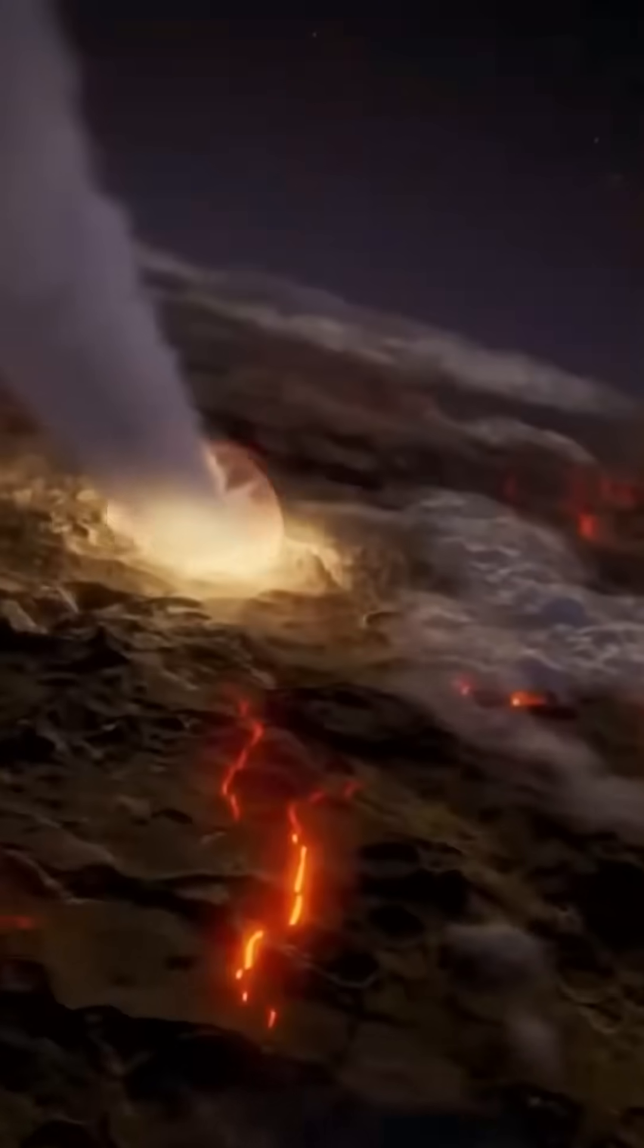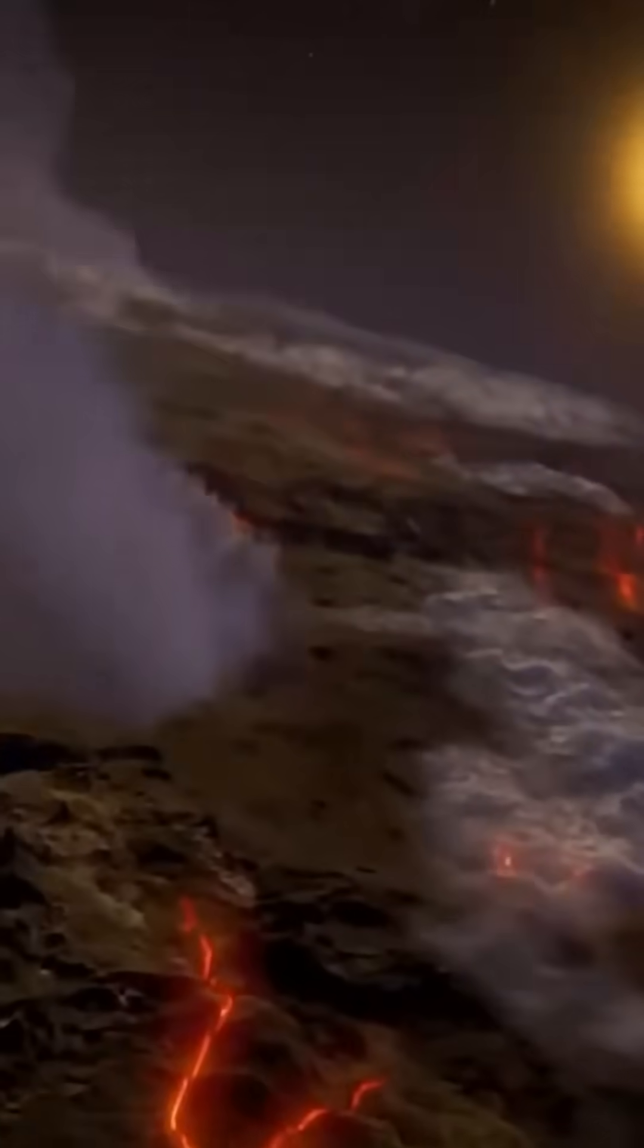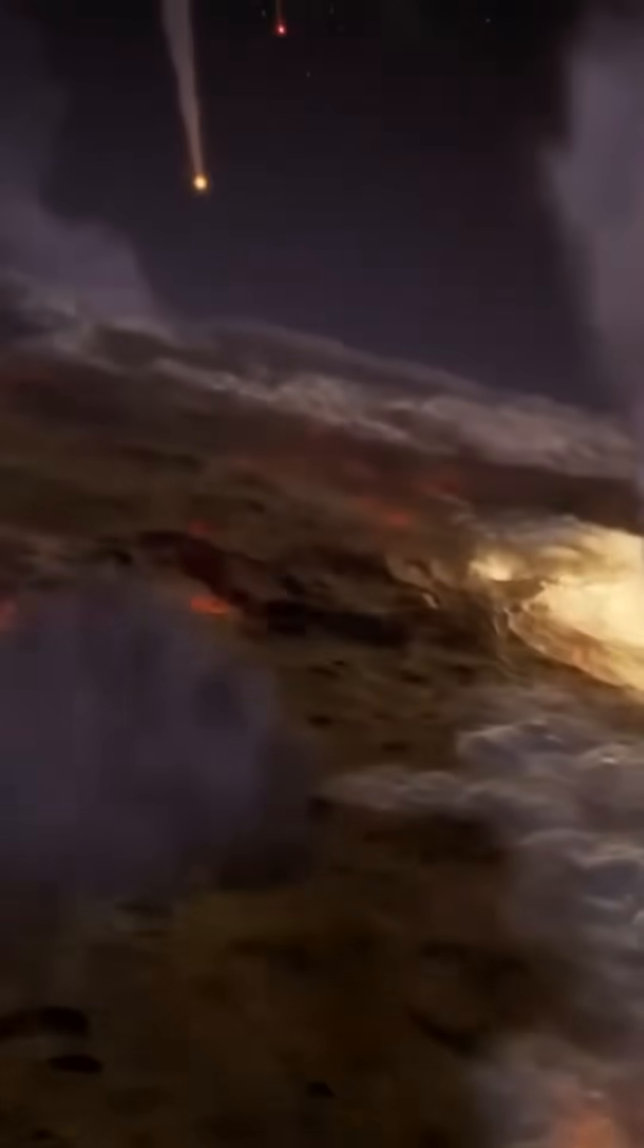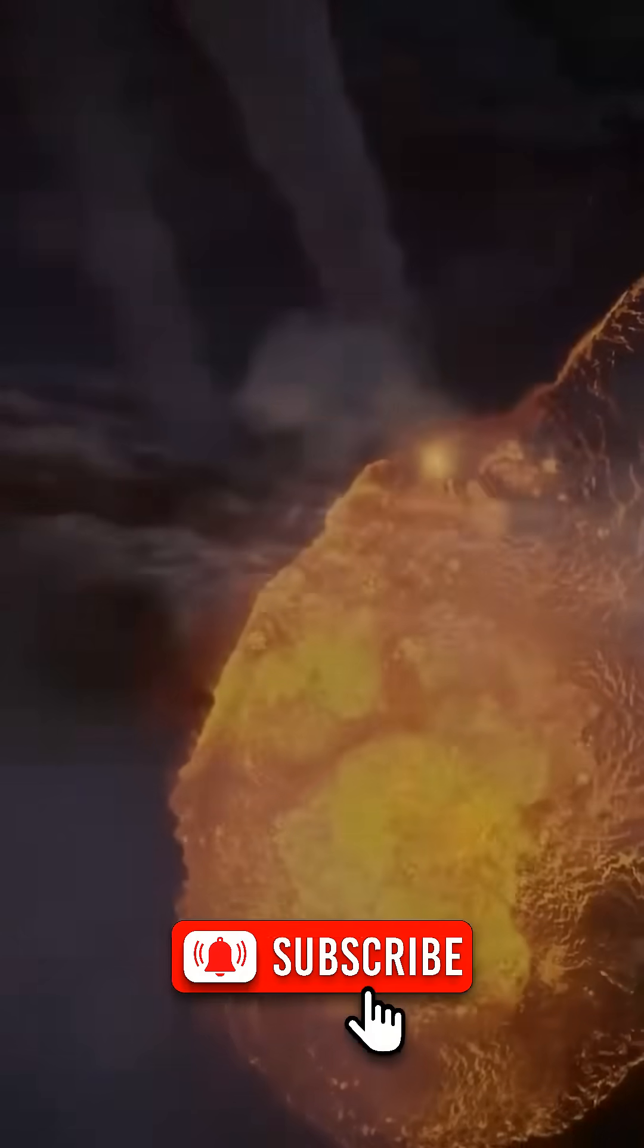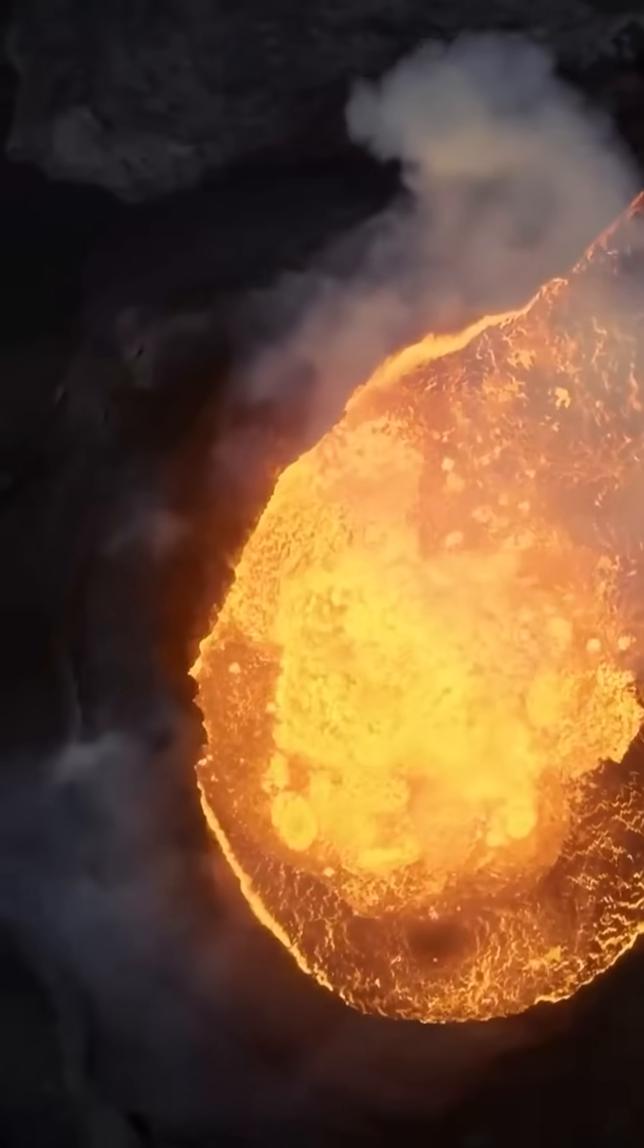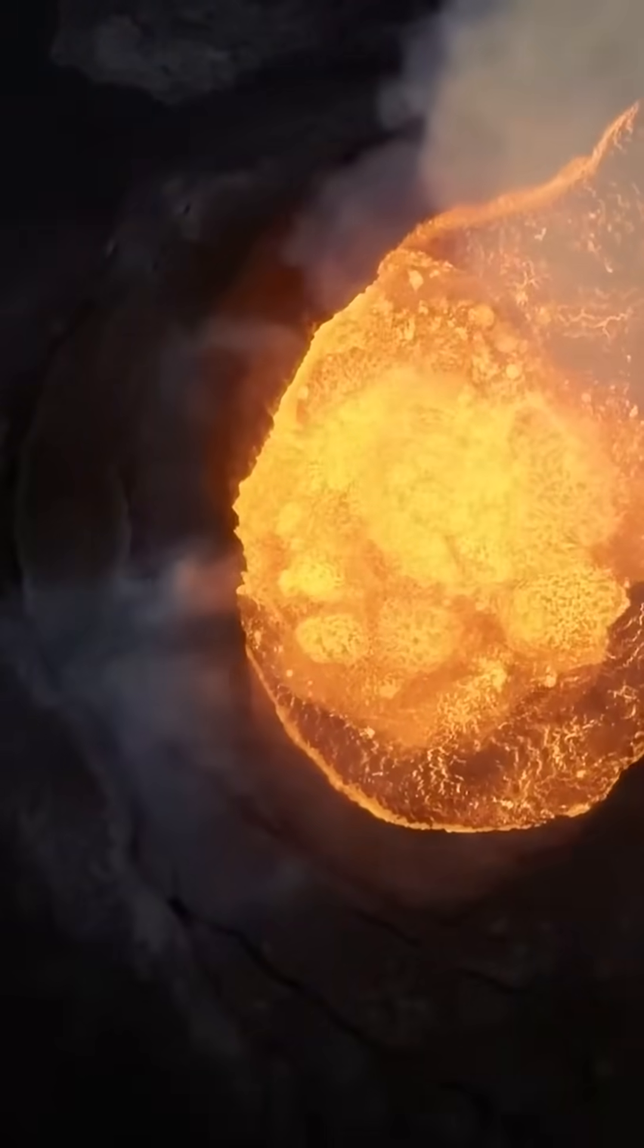Life on Earth began earlier than we thought. The origin of life is still one of the greatest mysteries in science. Our planet is about 4.5 billion years old. And for a long time, scientists believed life appeared a few hundred million years later. But what if it began even sooner?